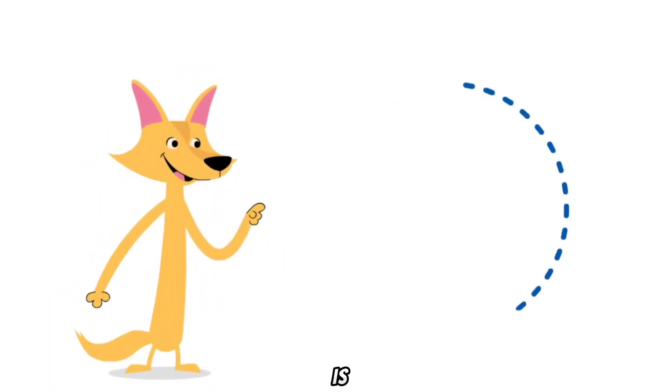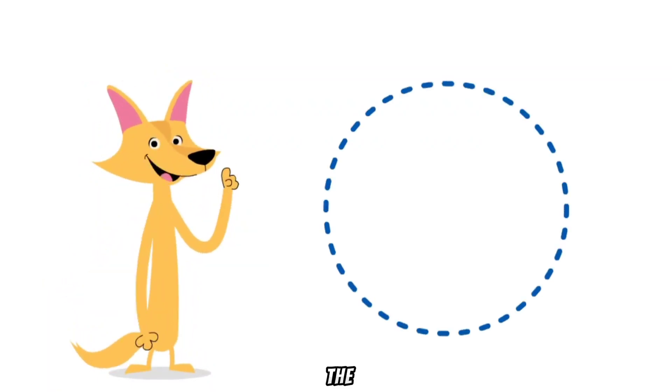Hey! A circle is one line that goes all the way around. There are no corners!